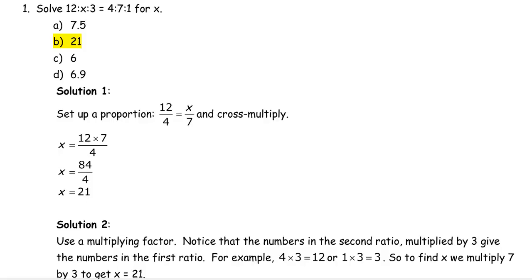Now another similar way to do this is you multiply the things on the diagonal that you know. So 4 times x would be 4x, and that would equal the product of 12 and 7.